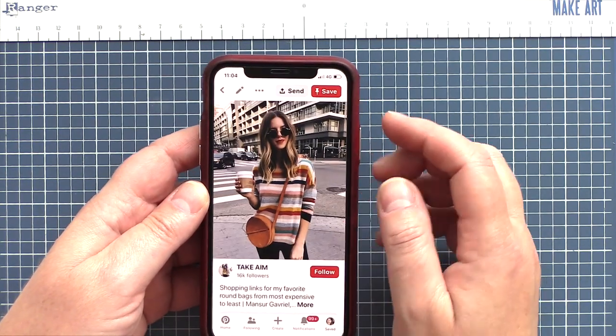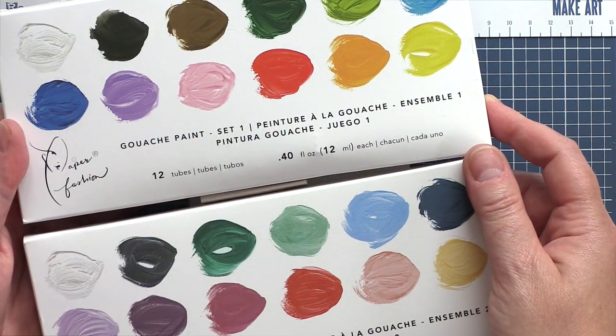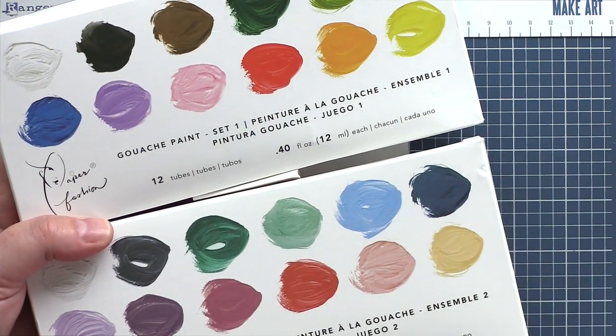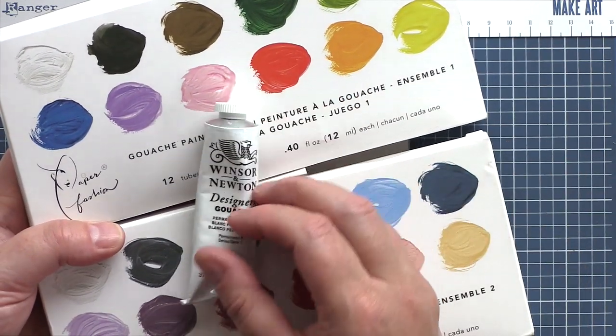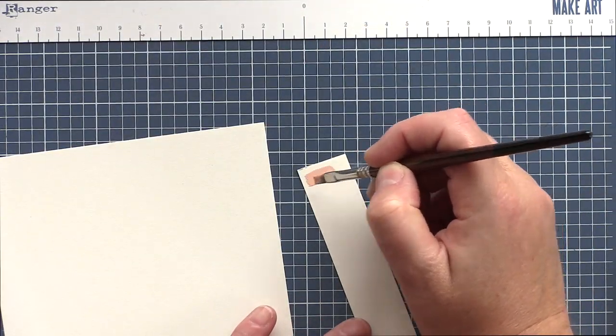So I set about using Windsor & Newton permanent white gouache along with American Crafts Paper Fashion gouache sets. I recently took a closer look at these gouache media and you'll find that video on my blog and YouTube channel.